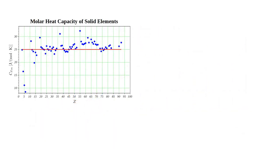Here is a plot of the room temperature molar heat capacities of most solid elements versus atomic number Z. The horizontal red line shows the classical prediction of the Dulong-Petit law, 25 joules per mole Kelvin. The actual values fluctuate about this line. The Debye model should explain values below the line.